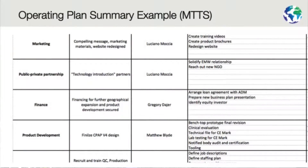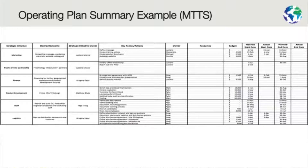Let's look at an example. Here's what one of our former GSBI social enterprises, MTTS, did. They divided their strategic initiatives into five categories: marketing, public-private partnership, finance, product development, and staff. For each one, they've listed the desired outcome, the strategic initiative owner, and the various actions or tactics they need to carry out. They also added the budget and key dates — the start date and the end date.